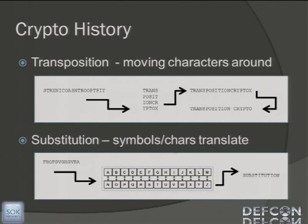A little bit of where it started: cryptography started out a long, long time ago. Some of the earlier crypto methods were transposition — you can see here that what they did is move a bunch of characters around. The other one, I'm sure you've all seen on the back of cereal boxes, is substitution — that's pretty much lining up letters and substituting them from one another.